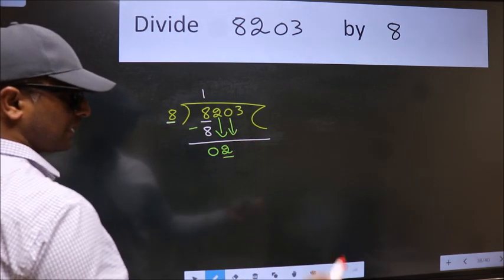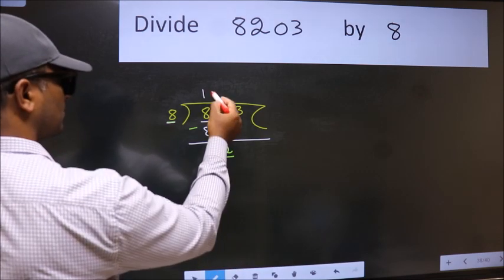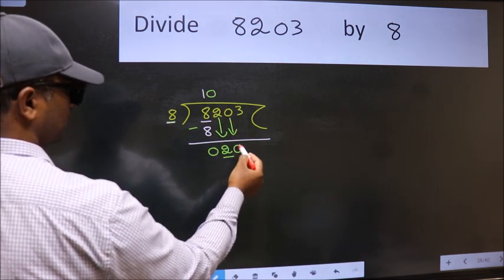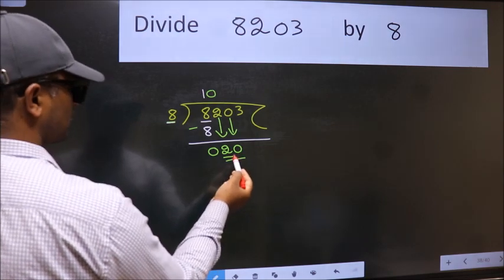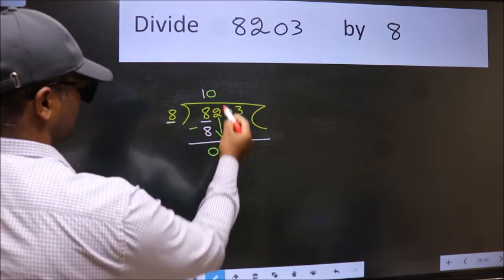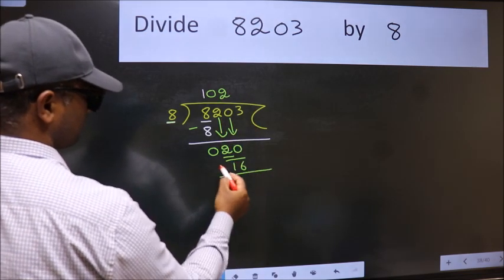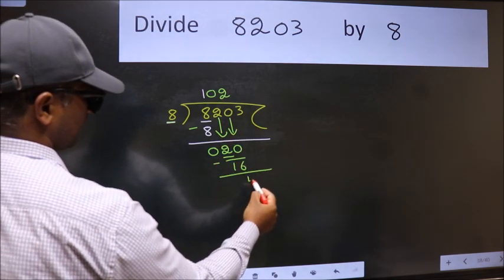The rule to bring down the second number is put 0 here. Then only we can bring this number down. So 20. A number close to 20 in the 8 table is 8 to 16. Now we subtract. We get 4.